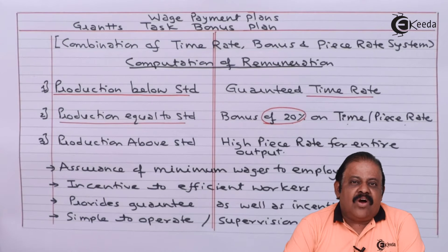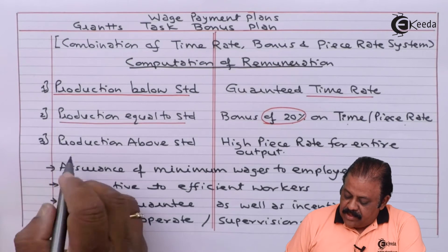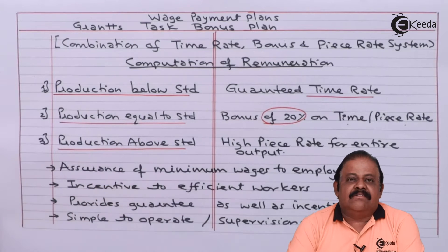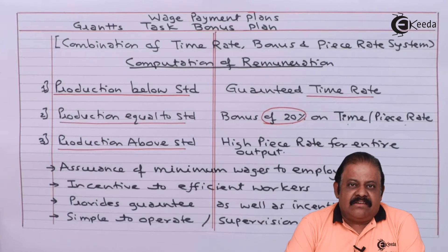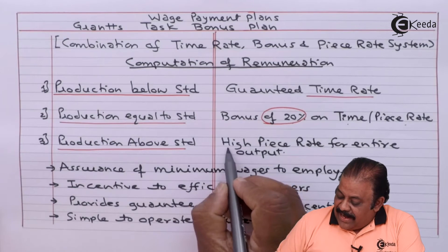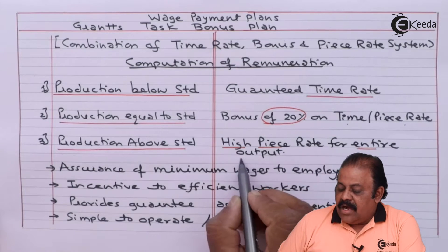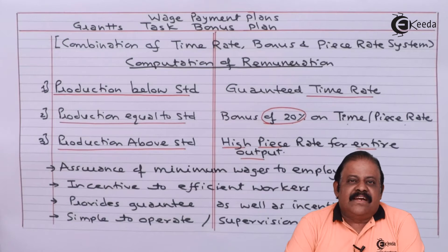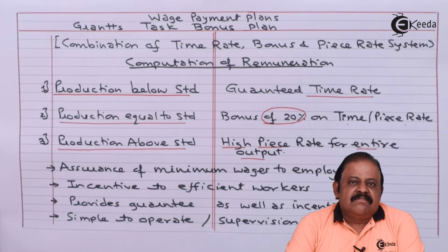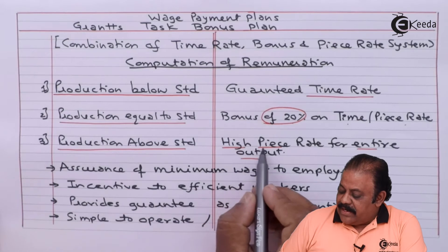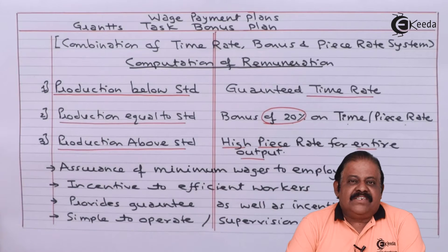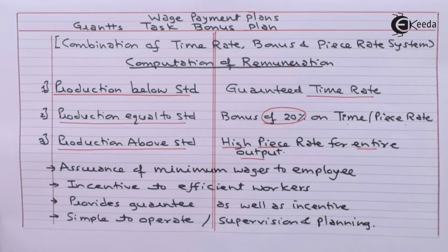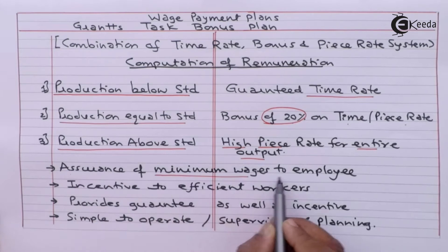Third: production above standard. If the worker is super efficient and goes above the standard, then he will get a high piece rate for the entire output. So there is also an incentive for very high-efficiency workers to earn more wages by showing more efficiency, because they will get high piece rate wages.